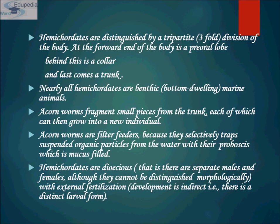Due to these similarities to Phylum Chordata, Hemichordata was once placed in that phylum. However, DNA studies have shown that hemichordata are actually closer to echinoderms than to chordata, and so they were placed in their own phylum. Additionally, corn worms of Class Enteropneusta can fragment small pieces from the trunk, each of which can grow into a new individual.